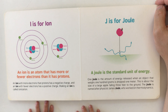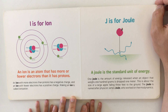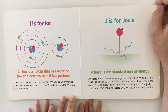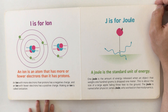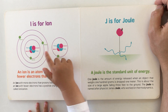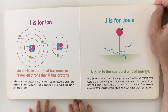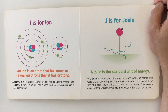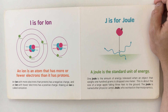You can hear some kookaburras in the background! I is for ion. An ion is an atom that has more or fewer electrons than it has protons. An ion with more electrons than protons has a negative charge, and an ion with fewer electrons has a positive charge. Making an ion is called ionization.